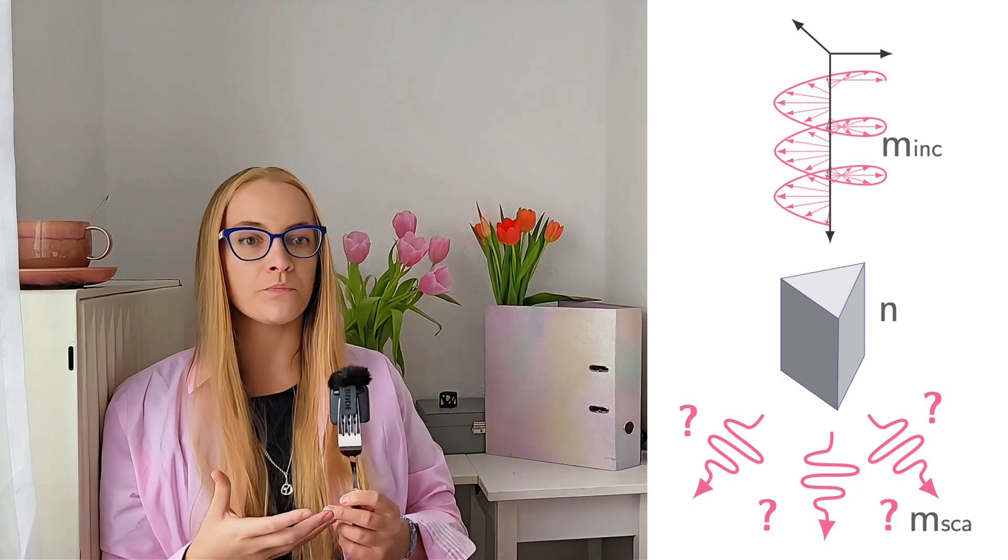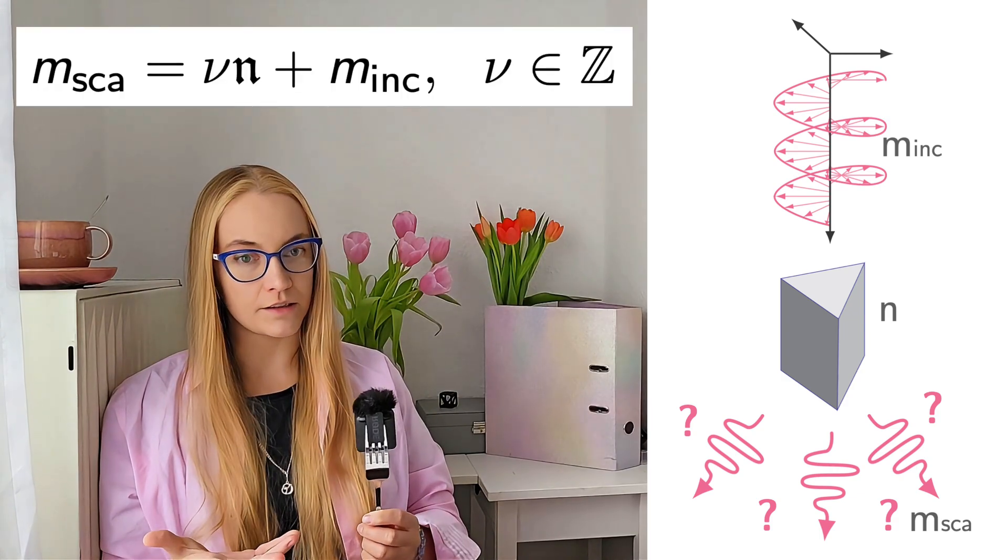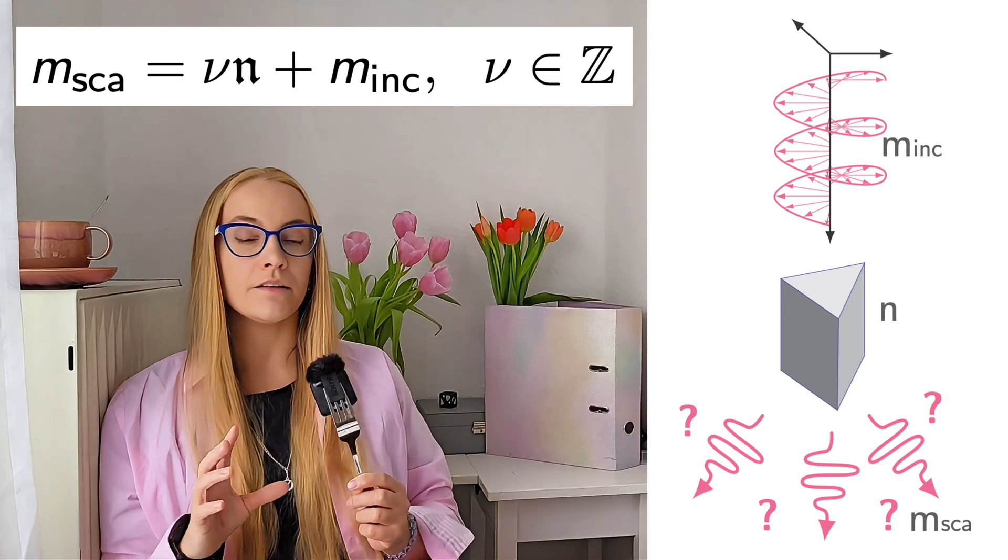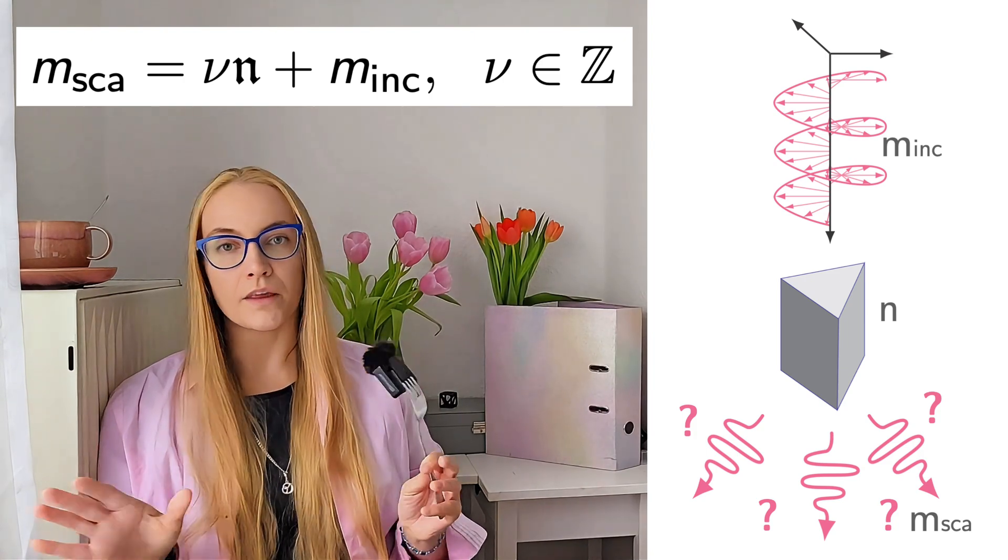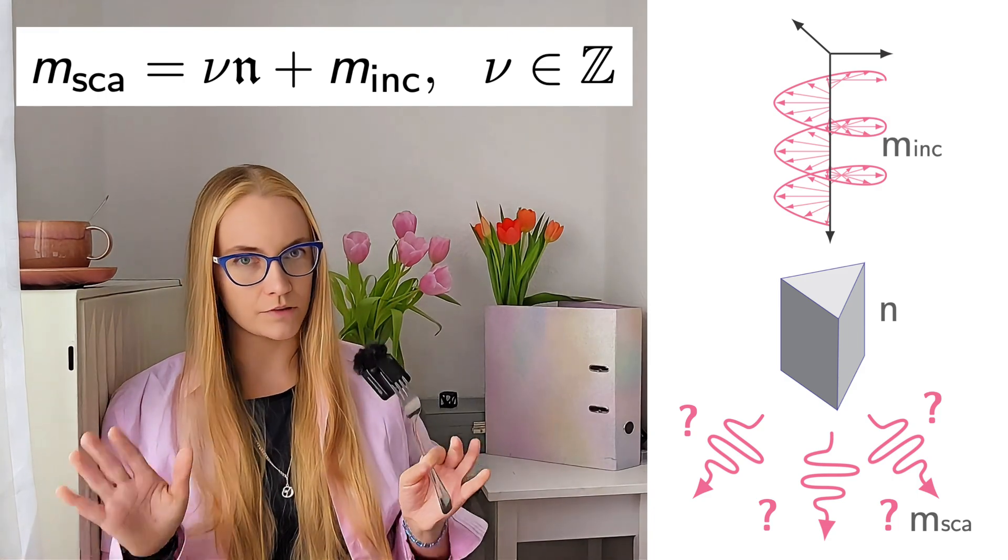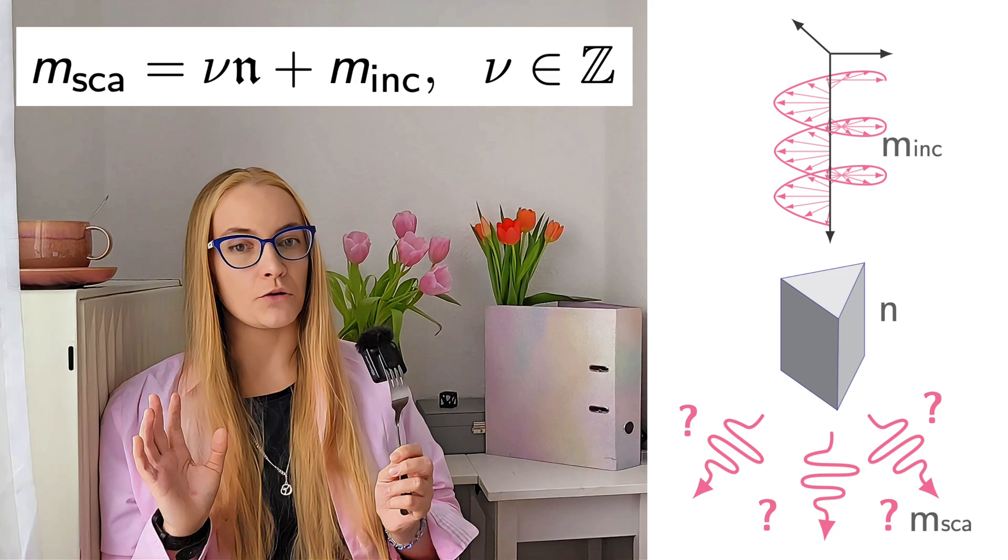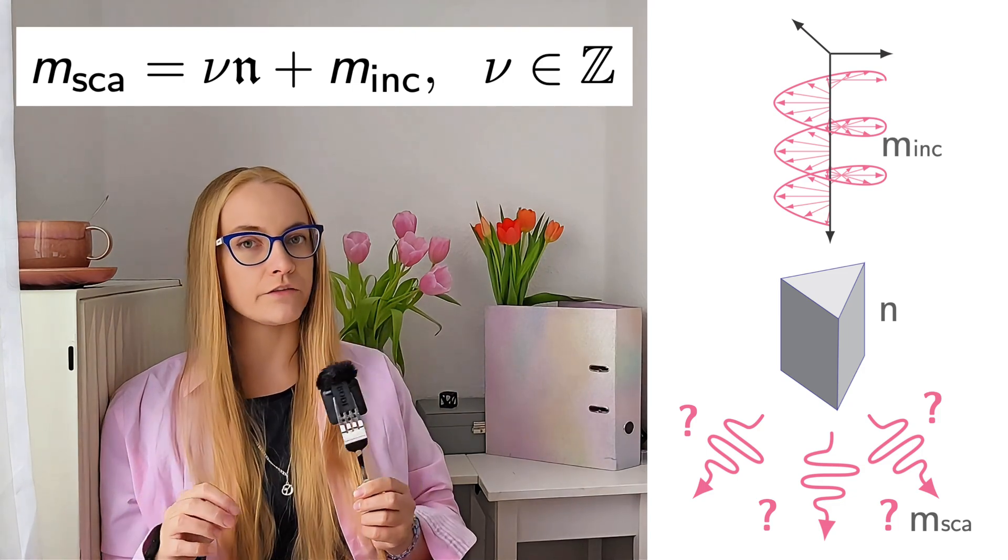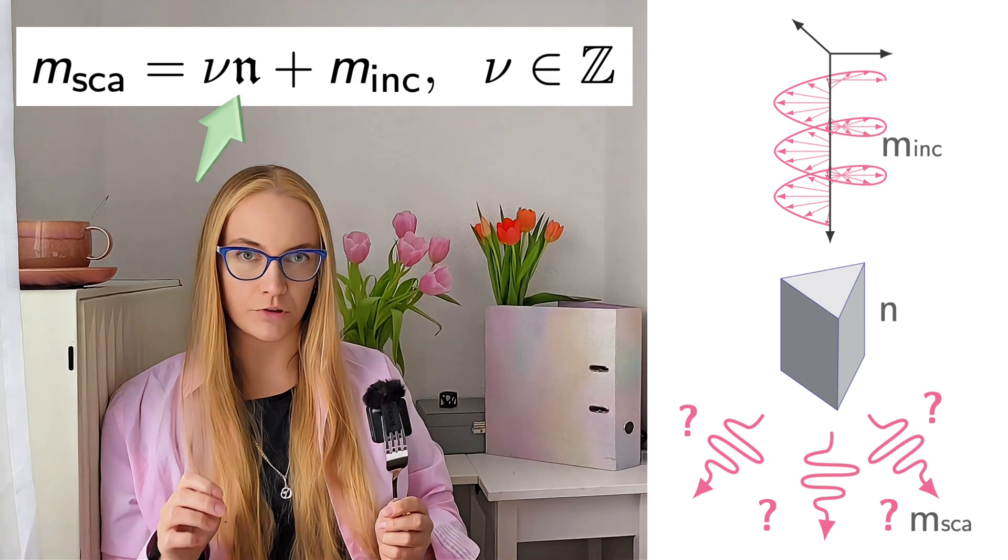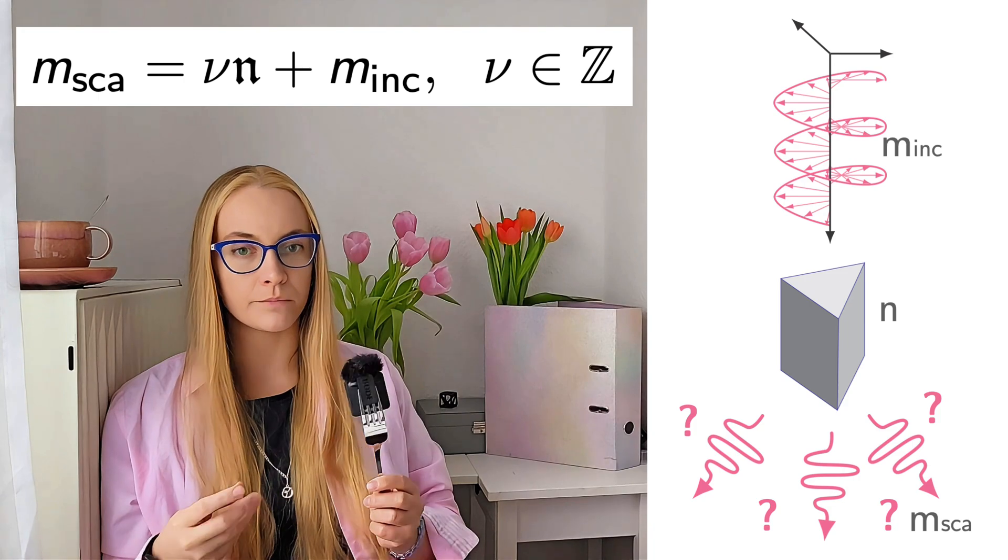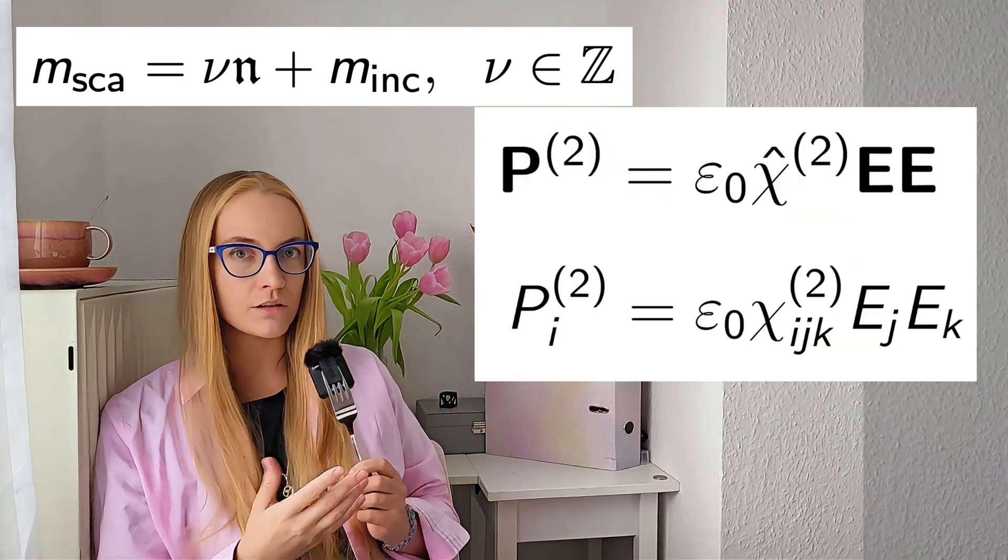So what happens during the second harmonic generation by a nanostructure? First there is a linear scattering with selection rules that we already know from the previous video. Linear scattering knows nothing about the crystalline lattice. We assume that the bar of regions effects are small, so the fields inside the structure as well as the scattered fields will have additional total angular momentum projections which are multiples of the structure's symmetry order n.